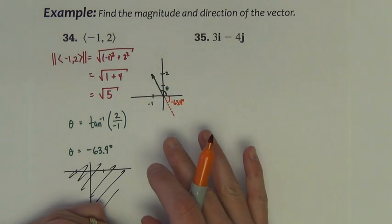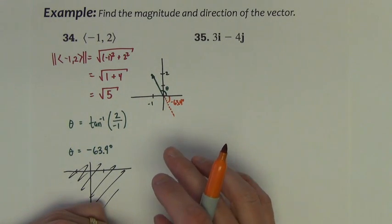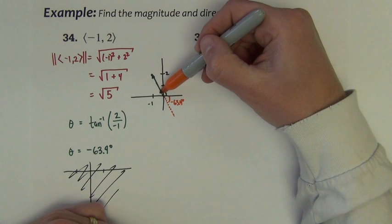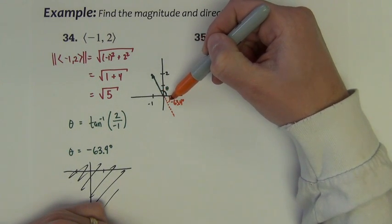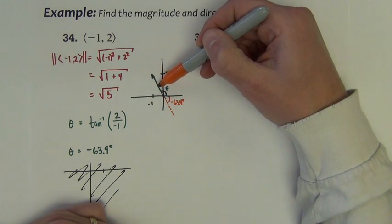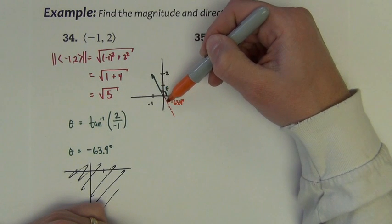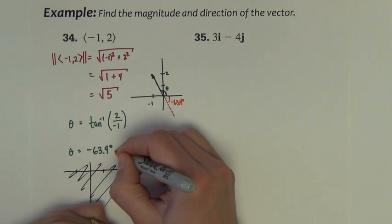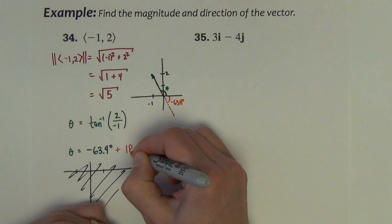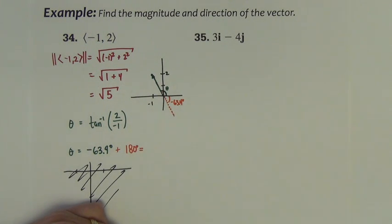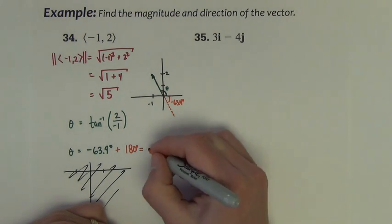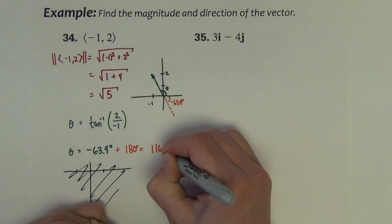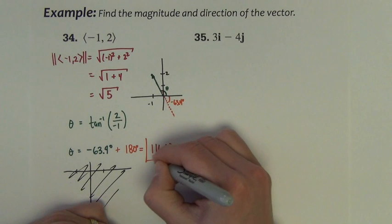Well, a picture can kind of answer exactly what to do with that number. The angle that I want and the angle that the calculator gave me, notice that they are supplementary angles, they add to 180 degrees. So to find the angle that I actually want, I need to add 180 to that. And if I add 180 to that, we get 116.6 degrees.